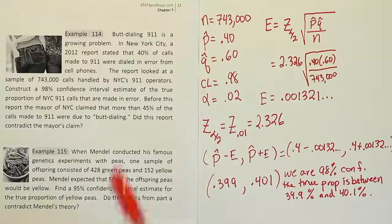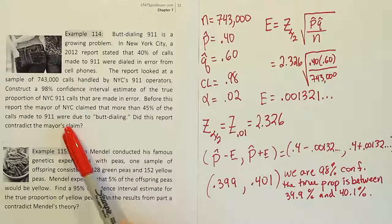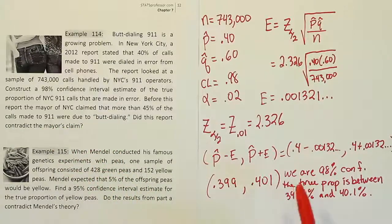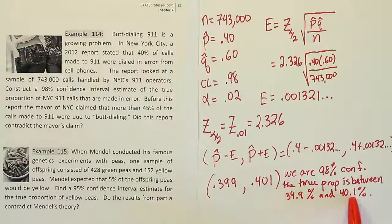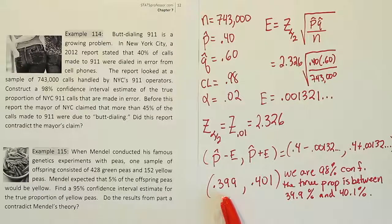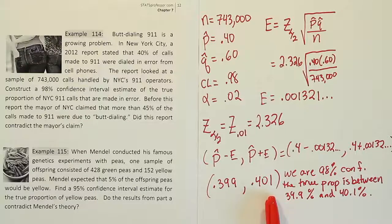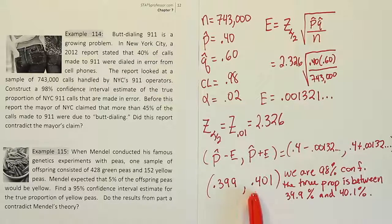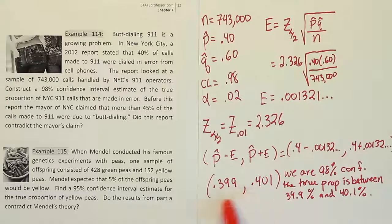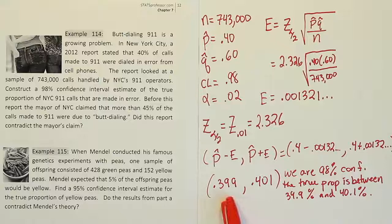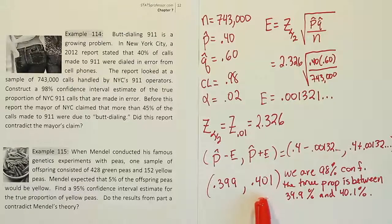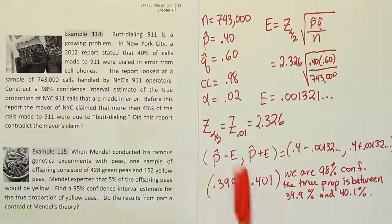So let's check this against the mayor's claim. The mayor claimed that more than 45% of the calls made to 911 were due to butt dialing. Well, in our interval, we don't have that number 45% in there. It says the true percentage is somewhere between like 39.9 and 40.1. And basically, this is a really narrow interval that's surrounding 40%. So basically, we're looking at about 40%.